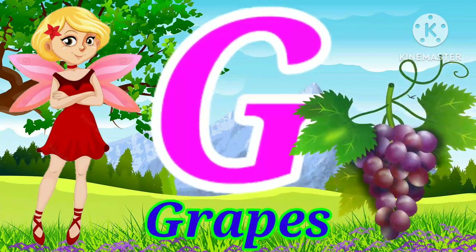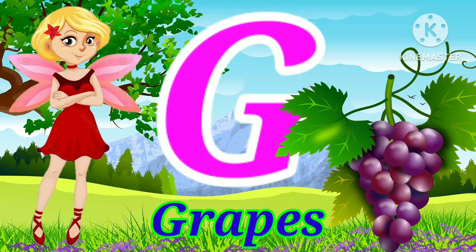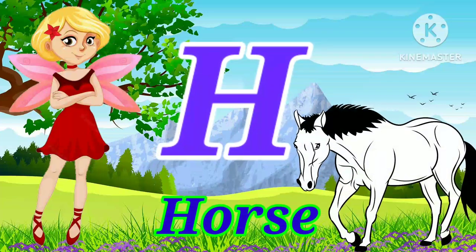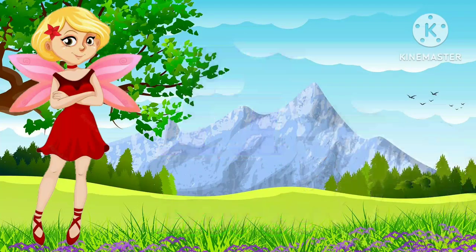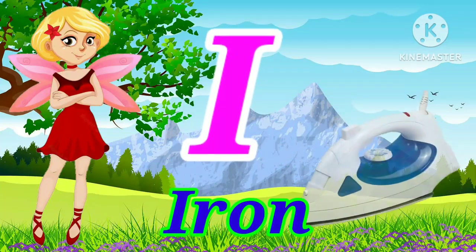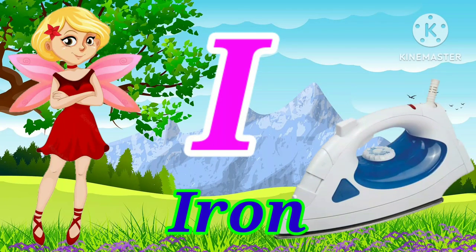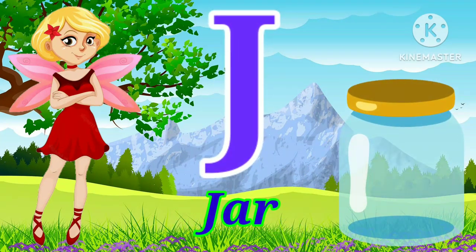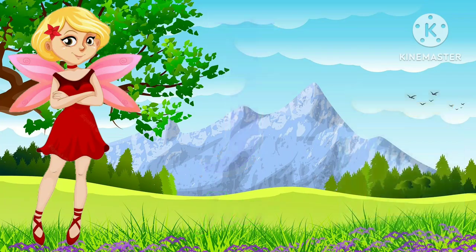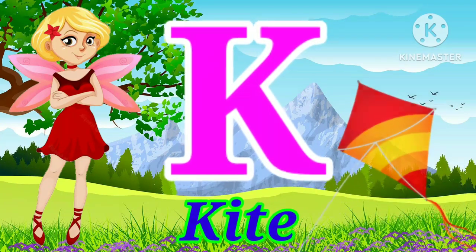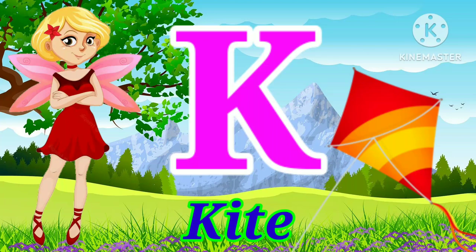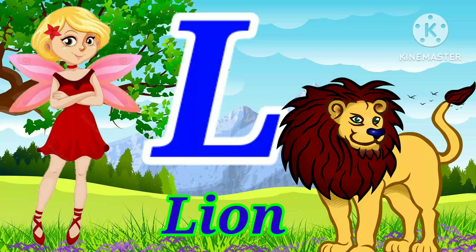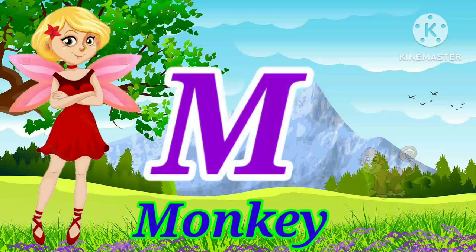G. G for grapes. H. H for horse. I. I for iron. J. J for jar. K. K for kite. L. L for lion.